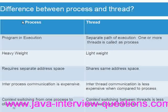First, a process is nothing but a program in execution. A program in execution is called a process. A thread is nothing but a separate path of execution. One or more threads make up a process.